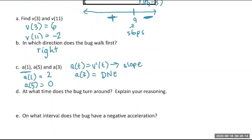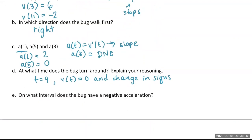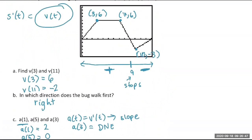The bug turned around at 9 seconds. To justify: V of T equals zero at t = 9 and there is a change in sign of velocity (from positive to negative). The change in sign is essential — if velocity equals zero but then bounces back positive, the bug merely stopped but continued moving right. There must be a sign change from positive to negative or negative to positive for an actual direction change.